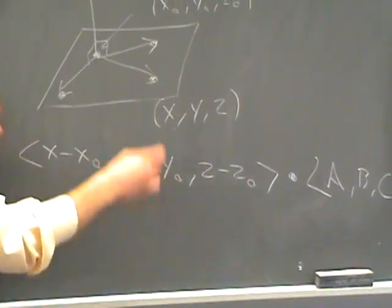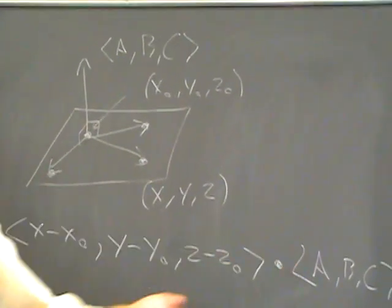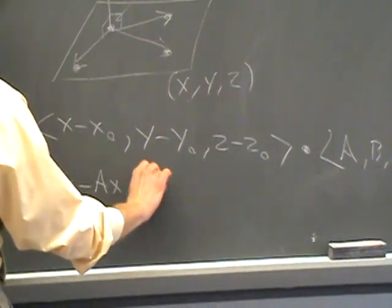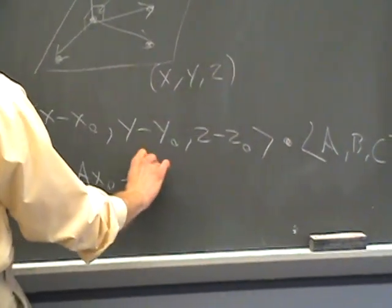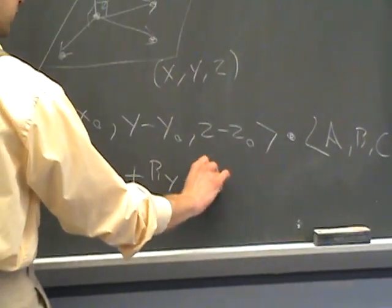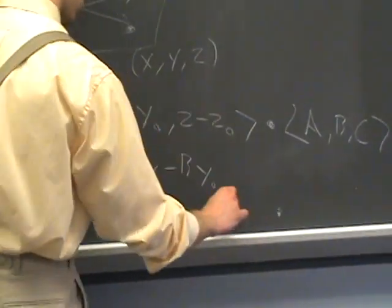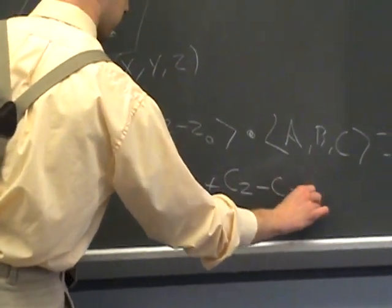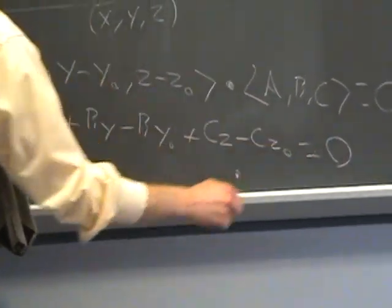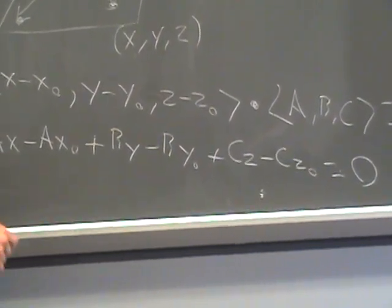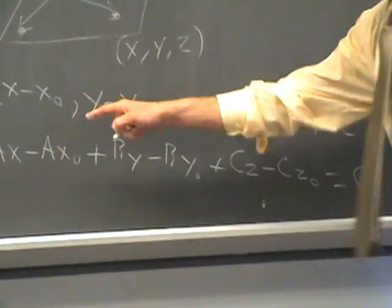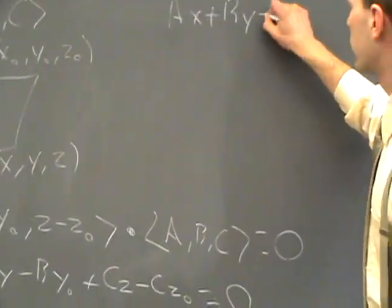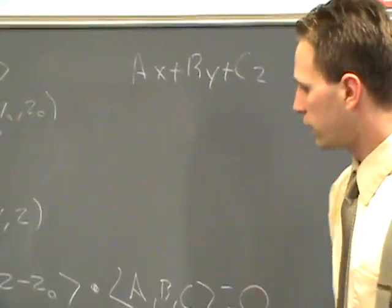All you have to do is work out this dot product and out will fall the equation of the plane. Let's dot them. A dot this, you'll get AX minus AX0 plus BY minus BY0 plus CZ minus CZ0 equals zero. And when you rearrange all this,